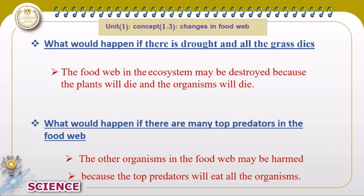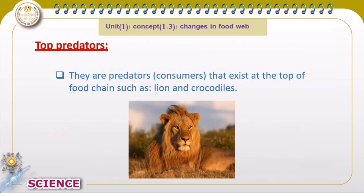What is meant by a top predator? A top predator can eat all the consumers. You find it at the end of the food chain — not the beginning. Examples of top predators are lions, crocodiles, and hawks.